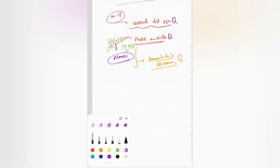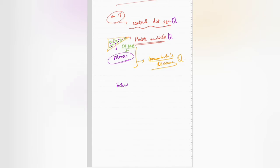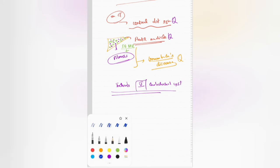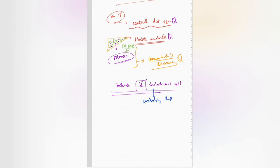The reason it has to be dealt as a separate entity is that it is classified under Todani's type 5 choledochal cyst. But if you see the underlying pathology, in the case of a choledochal cyst, it is either a pancreatic biliary duct junction anomaly or oligoganglionosis.